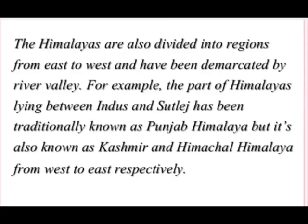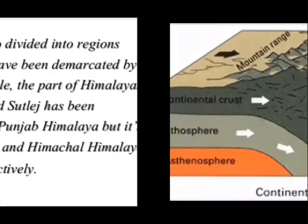The Himalayas are demarcated from east to west by river valleys — this is a natural phenomenon. The part of the Himalayas between the Indus and Sutlej was earlier called Punjab Himalayas, but is now referred to as Kashmir and Himachal Himalayas from west to east.